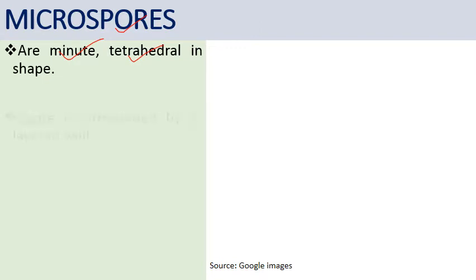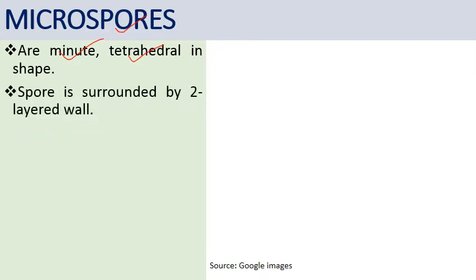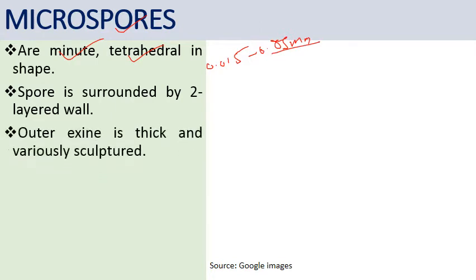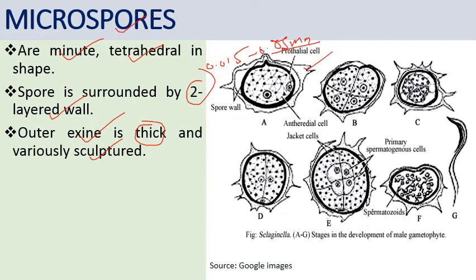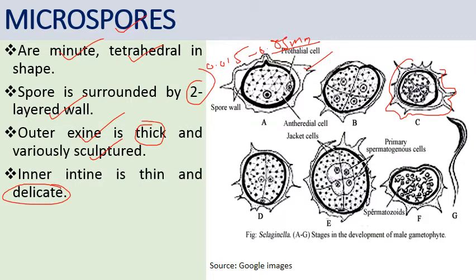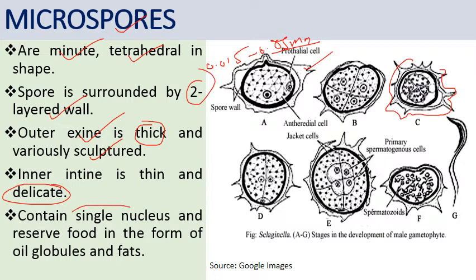Microspores are formed within the microsporangium after meiosis. They are minute, tetrahedron-shaped, with a diameter ranging from 0.015 to 0.05 millimeters. The spore is surrounded by a two-layered wall: the outer thick wall is known as exine, which is variously sculptured, while the inner layer (intine) is thin and delicate. It contains a single nucleus and reserve food material in the form of globules and fat.